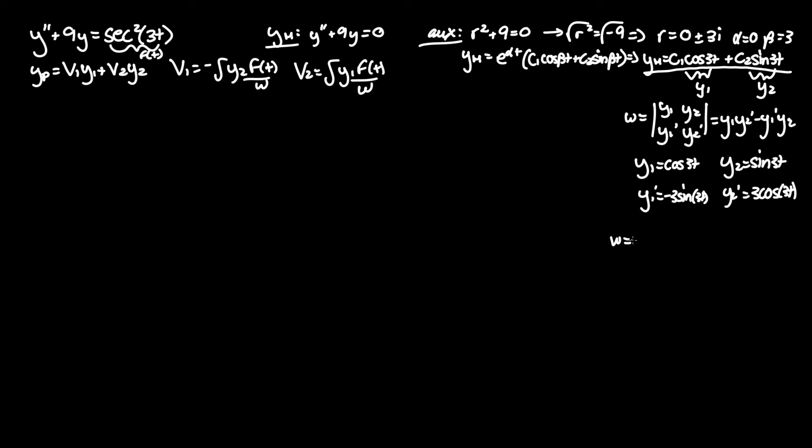Plugging this little table in, y1 is cosine of 3t times y2 prime 3 cosine of 3t, minus y1 prime negative 3 sine of 3t times y2 sine of 3t. So Wronskian equals we have 3 cosine squared of 3t plus 3 sine squared of 3t.